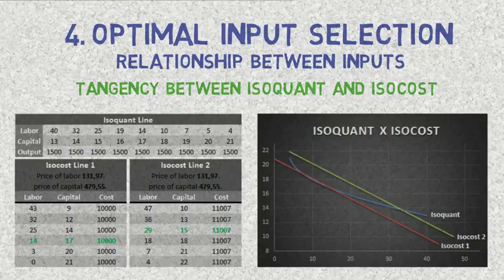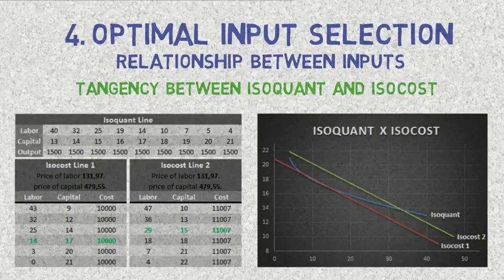The graph makes it easier to understand why this is true. If the farmer chooses the point where the isoquant meets the second isocost line, he will pay $11,007 for 29 workers and 15 machines to produce 1,500 pounds of output. However, looking at the isoquant table, he only needs 15 machines and 25 workers — meaning he has 4 extra workers. If instead he chooses the point of tangency between the isoquant and the first isocost line, he will spend $10,000 to produce 1,500 pounds of output using 14 workers and 17 machines, which is exactly the input needed. This is the point of equilibrium that farmers always seek.